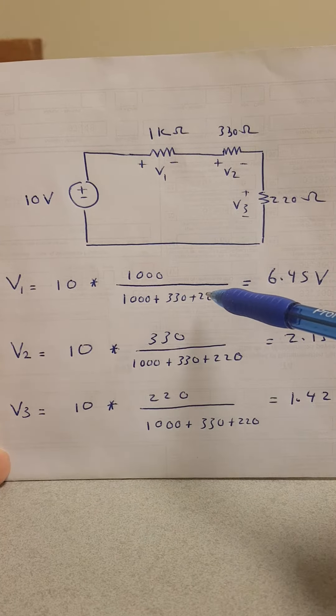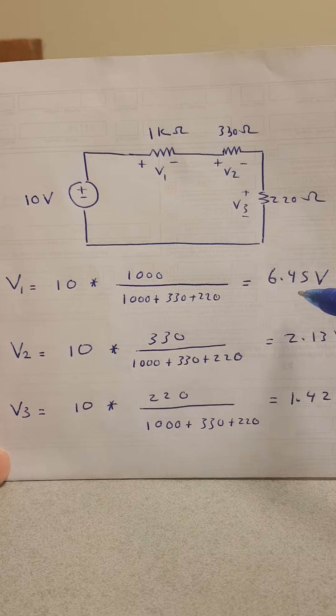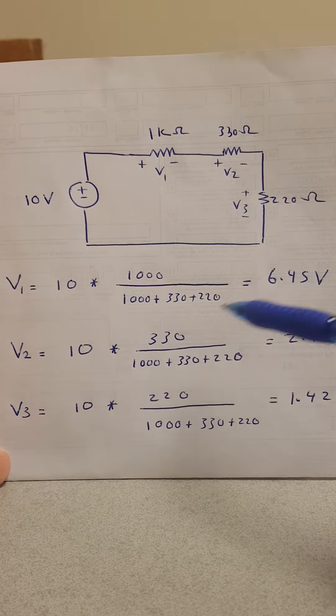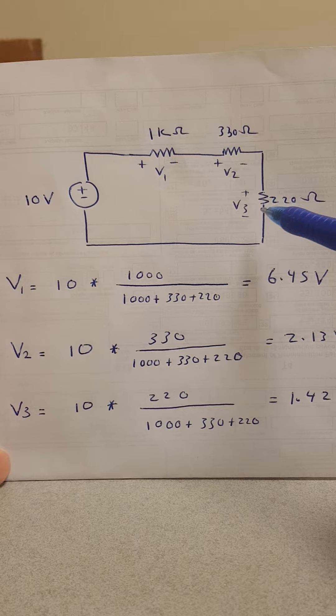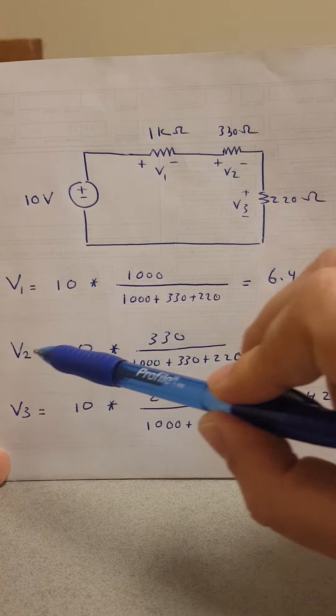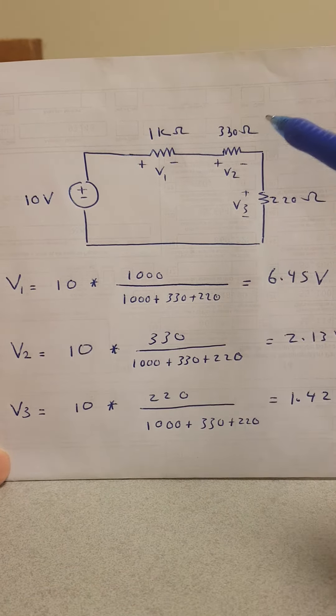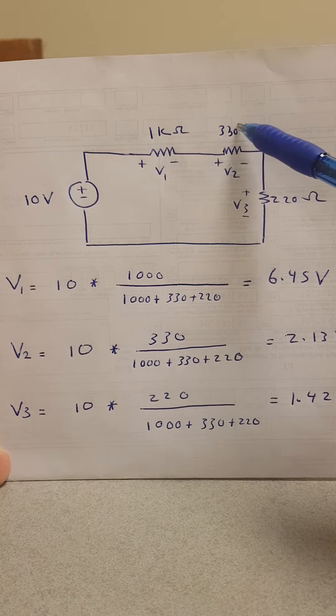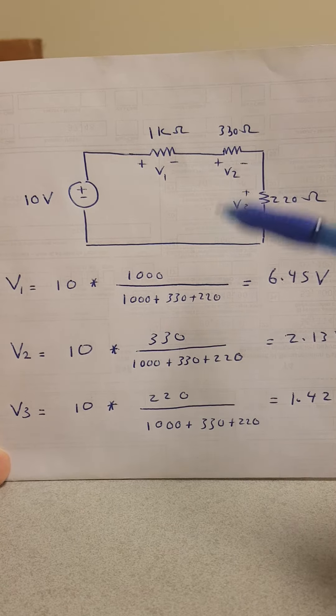And you see the voltage here is around 6.45 volt. Same thing for v2, same thing for v3. You just multiply the voltage supply by its own resistance of the voltage of interest, divided by the summation of all resistors.